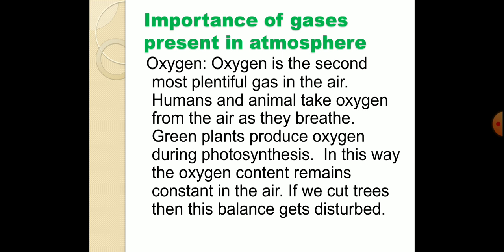Then comes oxygen. Oxygen is the second most plentiful gas in the atmosphere. Humans and animals take oxygen from the air as they breathe. Green plants produce oxygen during photosynthesis, and in this way the oxygen content remains constant. But if we cut trees, this balance gets disturbed.